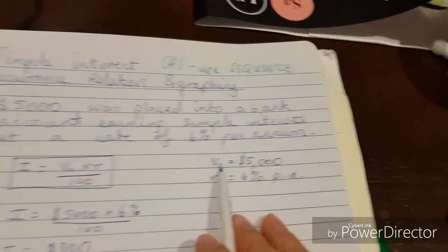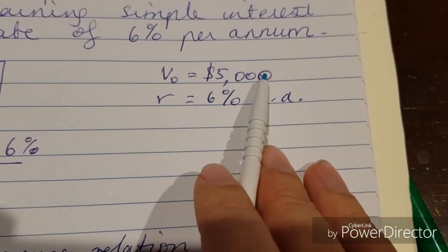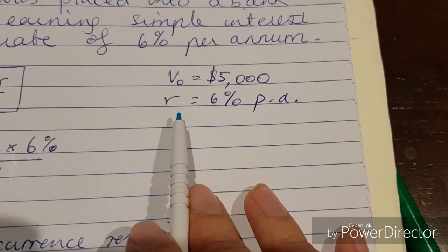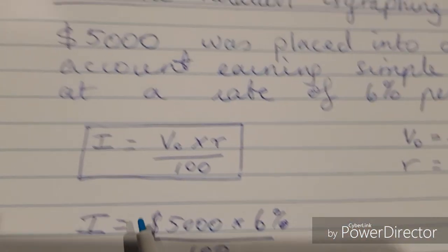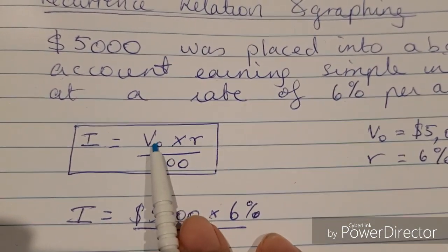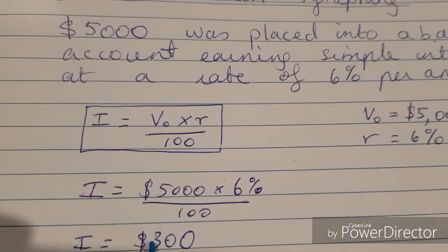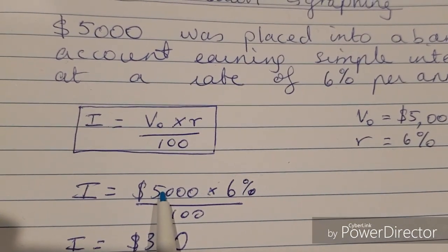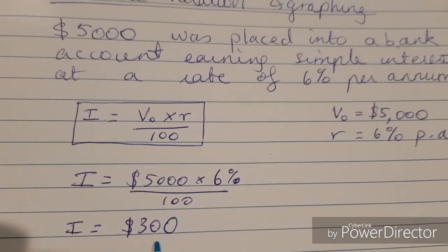First we need to know the principal is $5,000, the initial amount invested. We earned six percent per annum. To calculate the actual amount of interest earned, the formula is interest equals the principal multiplied by your interest rate divided by 100. So we substitute that in: $5,000 multiplied by six percent divided by 100. You get $300.